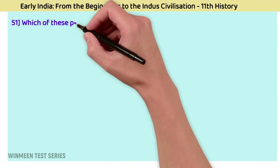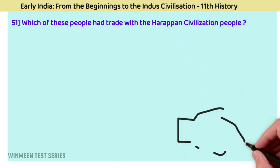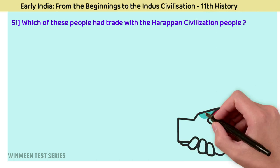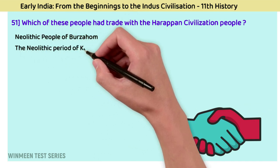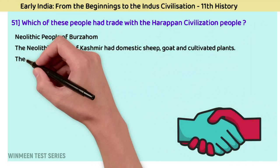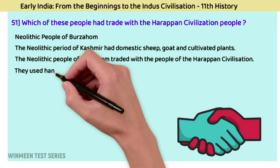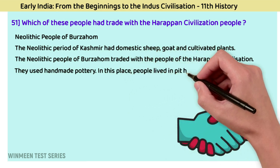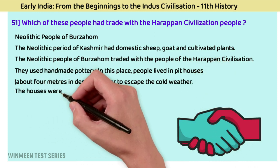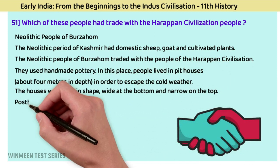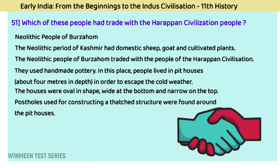Question 51: Which people had trade with the Harappan civilization people? The answer is the Neolithic people of Burzahom. The Neolithic people of Kashmir domesticated sheep and goat and cultivated plants. The people of Burzahom traded with the Harappan civilization. They used handmade pottery. In this place, people lived in pit houses about four meters deep to escape cold weather. These houses were oval in shape — wide at the bottom and narrow at the top — with post holes for a thatched structure found around the pit houses.